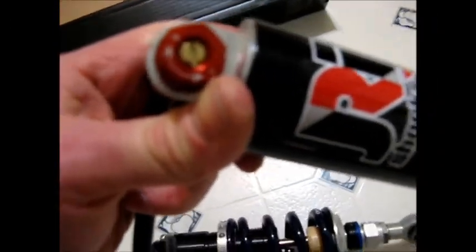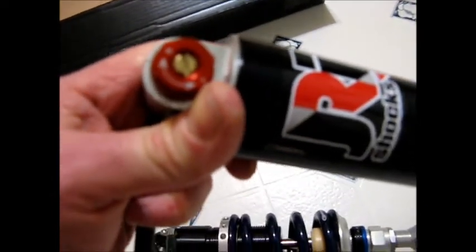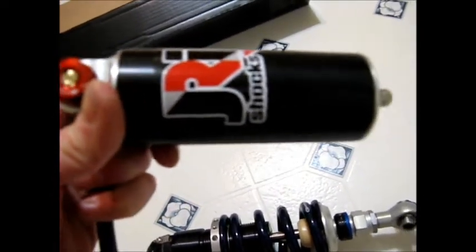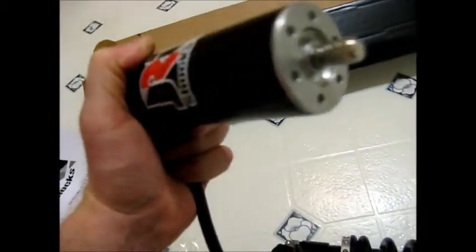And on the remote reservoir itself, with the cool sticker, we've got another bit of adjustment here. I should have this memorized. I can't remember which one is compression or rebound, but I'll look in the manual anyway. And it's nitrogen charged as usual.